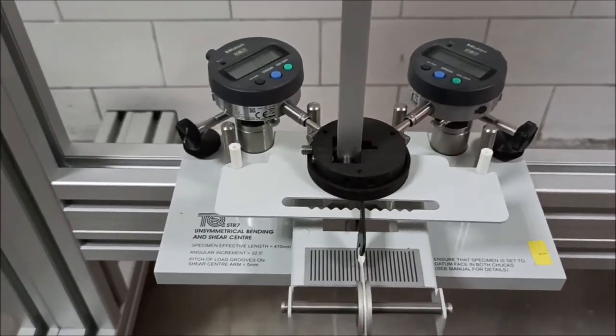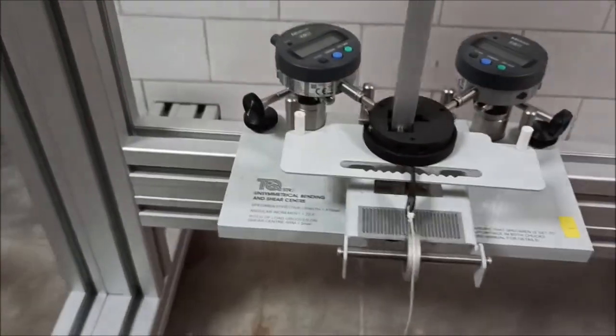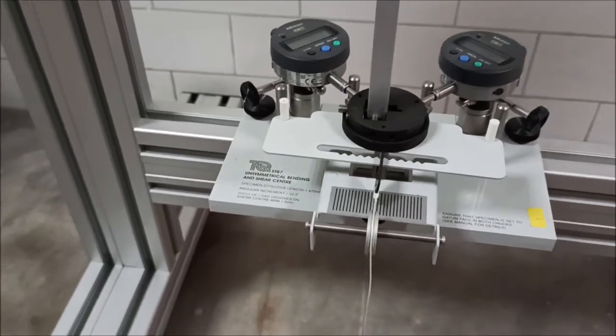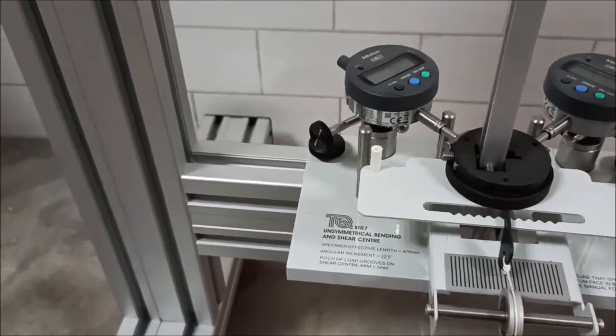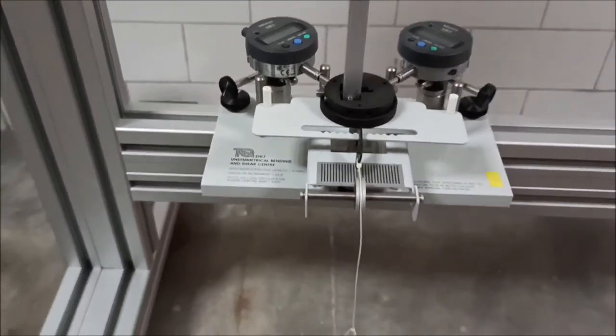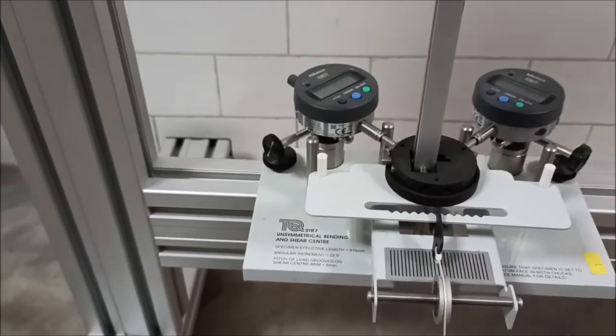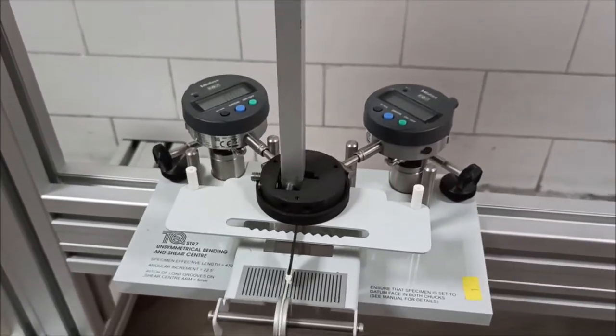This is the equipment for determination of unsymmetrical bending and shear center. We have already done the shear center experiment. Now in this lecture we are going to do the unsymmetrical bending experiment. This is the setup we need.